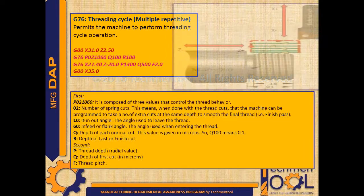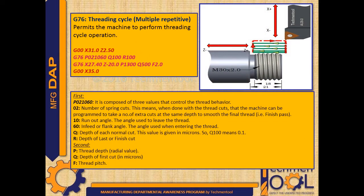G76 threading cycle in multiple repetitive type. This code permits the machine to perform threading cycle operation. In the following program, tool rapidly moves to X31 Z2.5 position. After that, threading cycle starts. In the first pink colored block, P021060 is composed of three values that control thread behavior: 02 indicates number of spring cuts — meaning the machine takes extra cuts at the same depth to smooth the final thread, which is the finish pass.